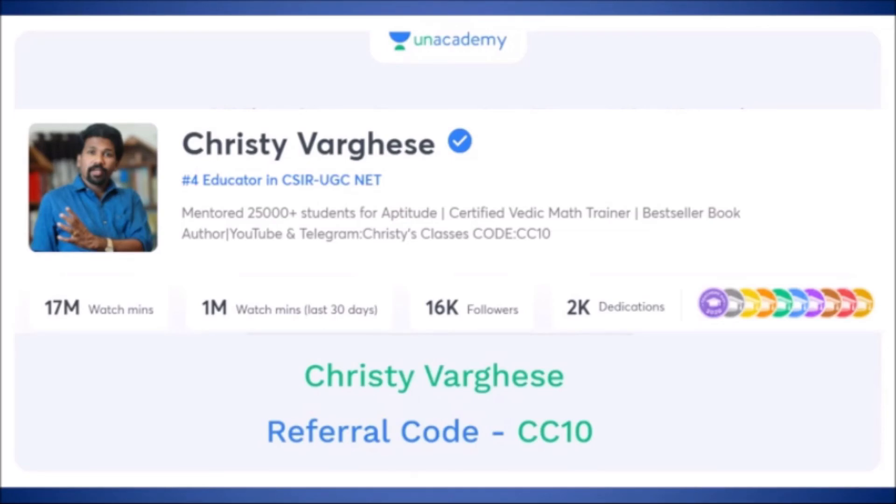And if you want live free classes for General Aptitude, you can download an Academy mobile application and search this profile Christy Vervis. And you can see 300 plus pre-recorded videos and upcoming daily live classes happen at 11 a.m. So Monday to Friday, 11 a.m., free classes happen in this profile.